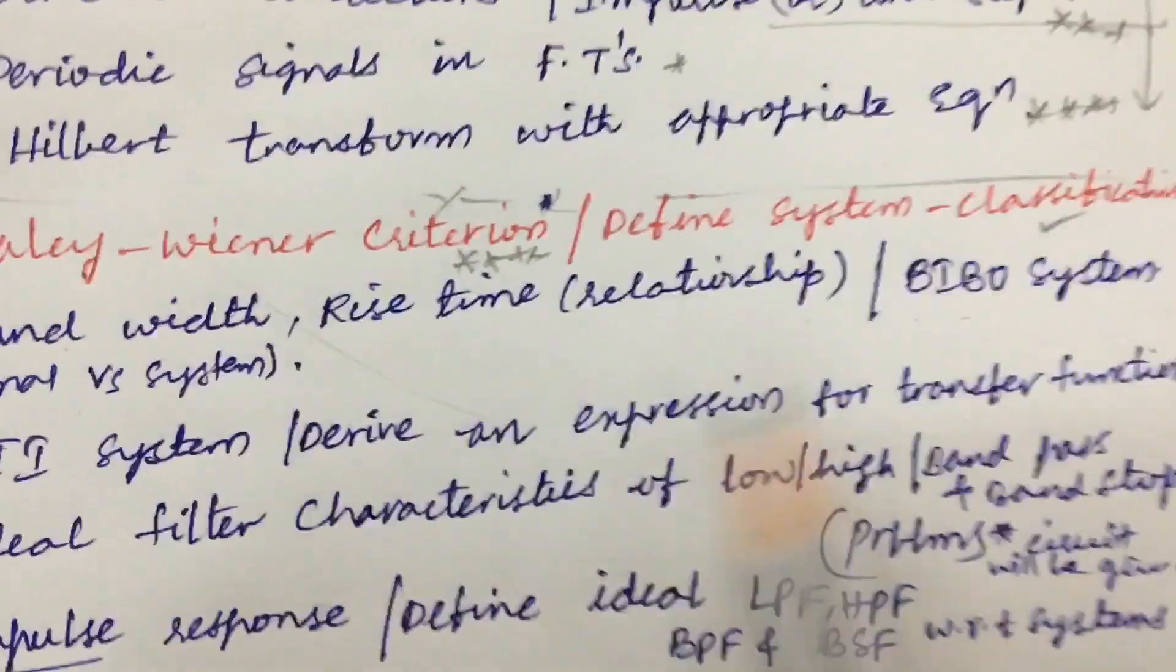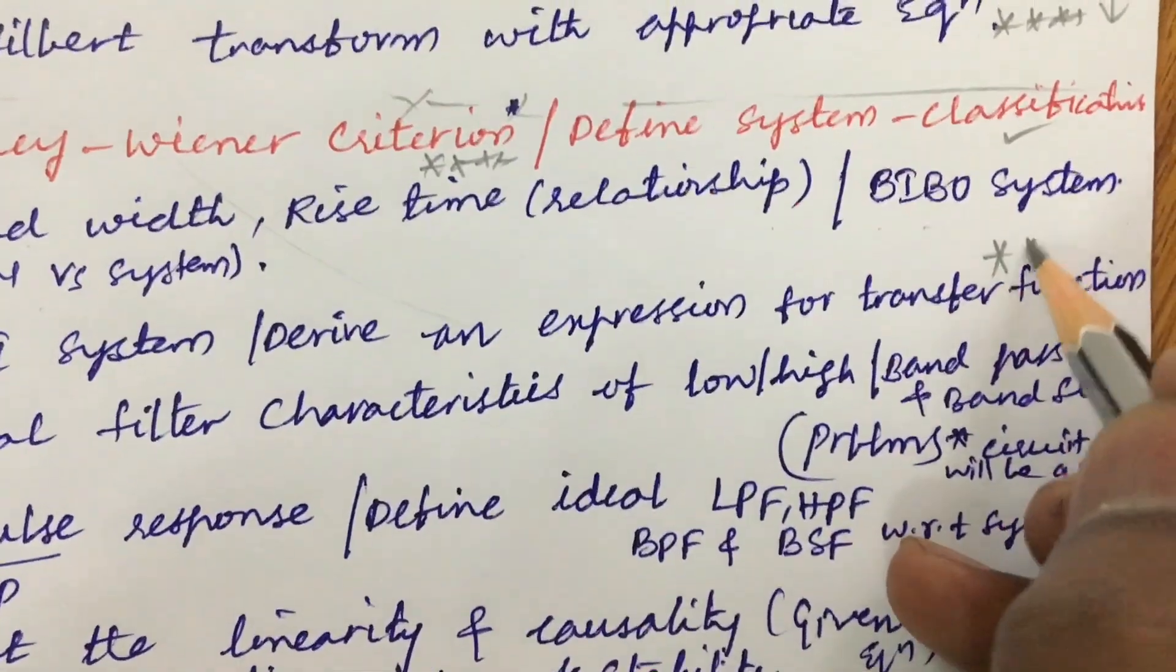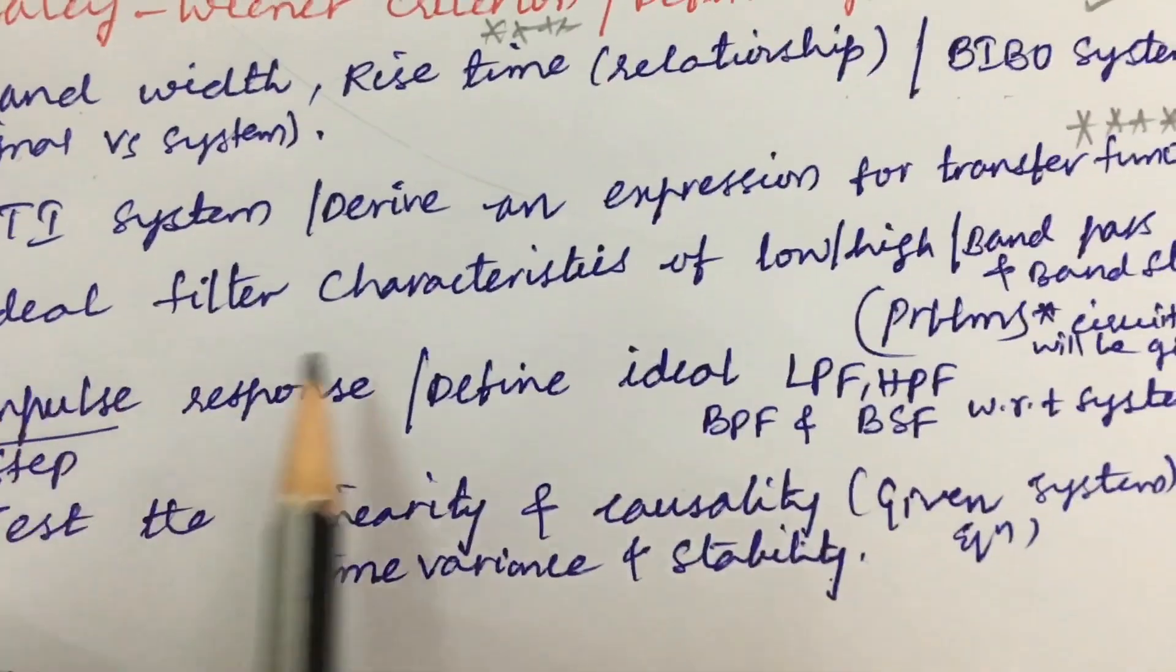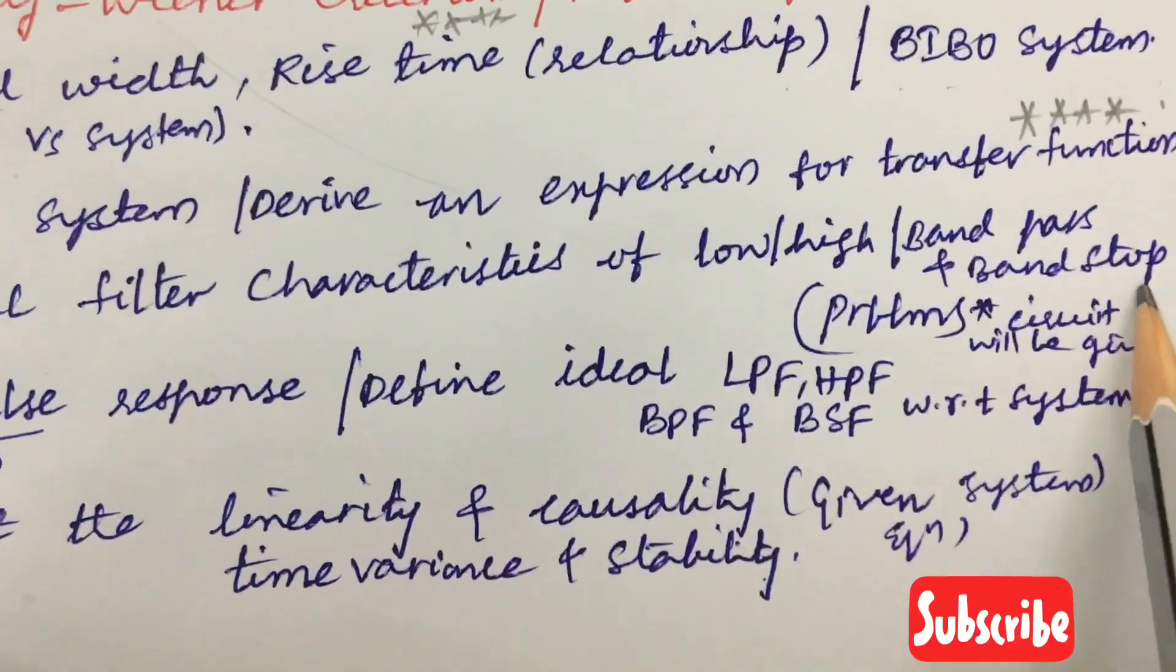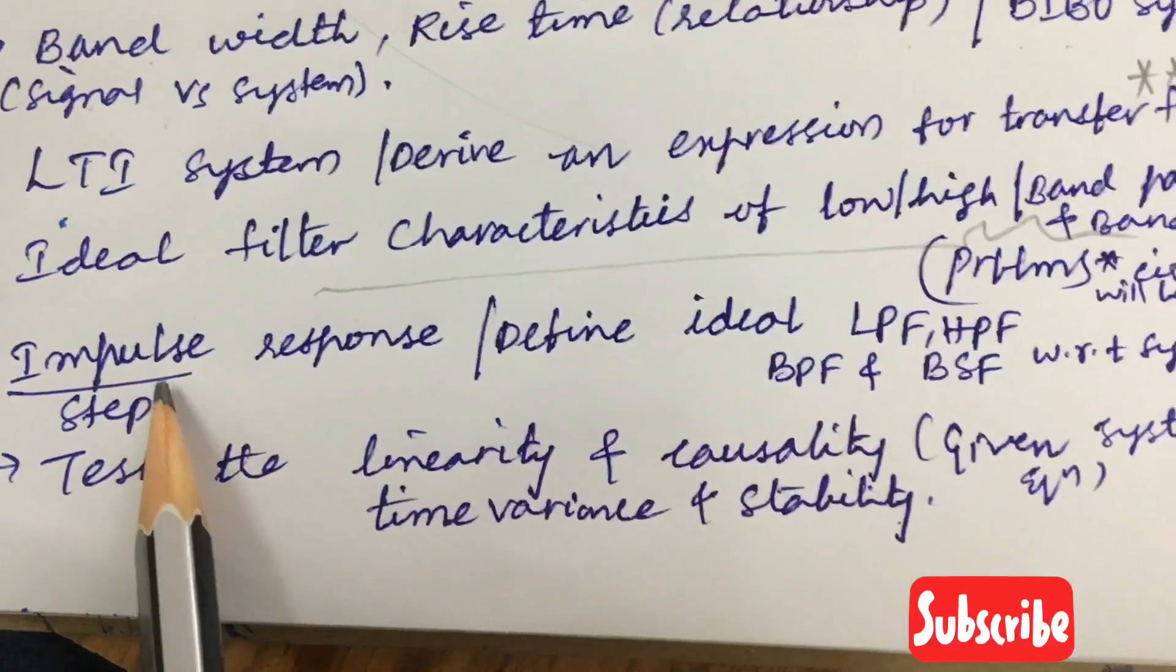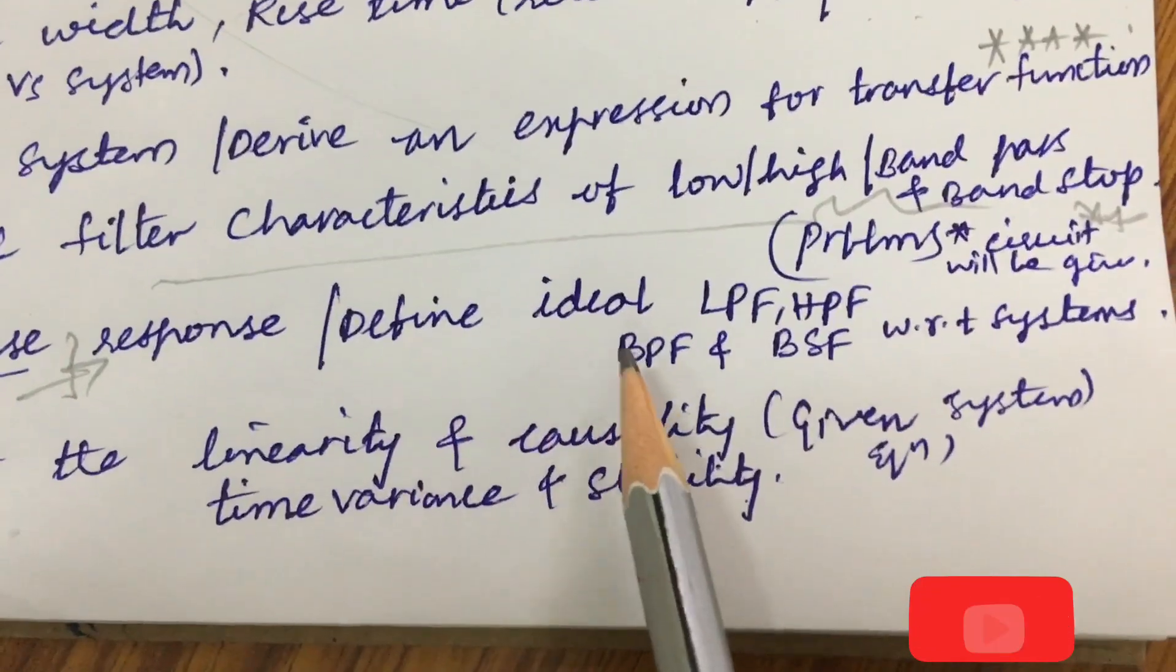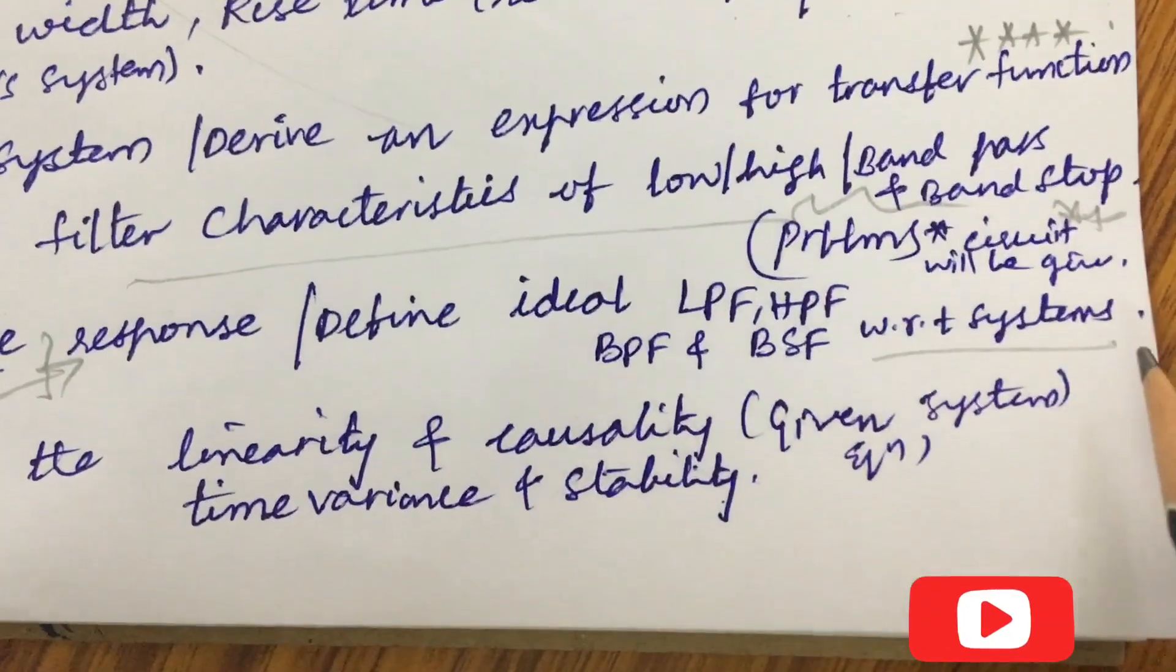Later BIBO system and LTI system derive an expression for a transfer function related to LTI system one is one of the gunshot question. Later ideal filter characteristics of low high band pass as well as band stop and the problems related where the circuit will be given and you are going to work out the problems related to it. Later impulse response and the step response the differences and define ideal LPF HPF BPF and BSP with respect to the system.